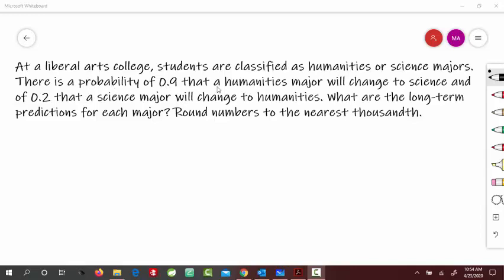There is a probability of 0.9 that humanities majors will change to science, and 0.2 that science majors will change to humanities. So what are the long-term predictions for each major? Round numbers to the nearest thousandths.